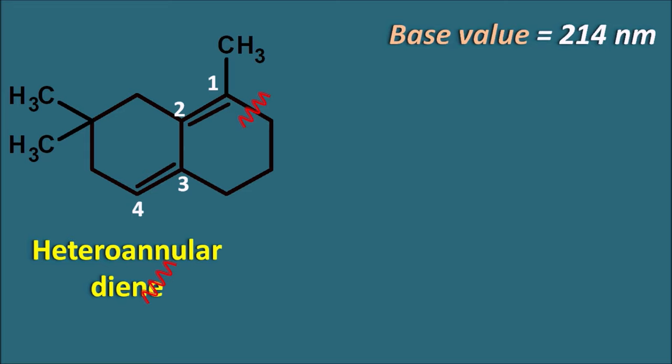In this way, we can calculate the lambda max value for a given structure using the Woodward-Fieser rules — checking all possibilities: exocyclic double bonds, extended conjugation, alkyl substitutions, and ring residues, then adding all increments to the base value to get the final lambda max. I hope you have enjoyed this video. If you have any doubts, please post them in the comment box and we will clarify. If you like this video, please subscribe to our channel. Thank you for watching.